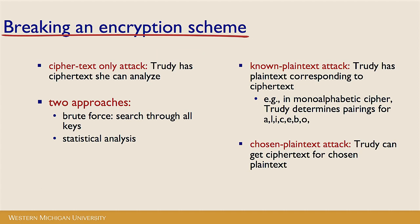How might Trudy go about trying to break the encryption that Alice and Bob are using? She has a couple of different options. There's a ciphertext-only attack, in which Trudy just has ciphertext that she can analyze. She was listening in on the communication channel and managed to snag the message between Alice and Bob, but it's in its encrypted form — all she has is the ciphertext. She could either brute force the encryption, searching through every possible key until she hits the right one, or she might use statistical analysis, applying some mathematical tricks to try to break it.